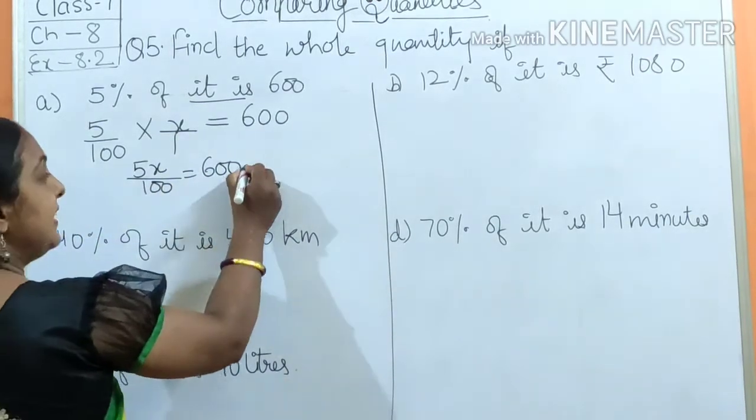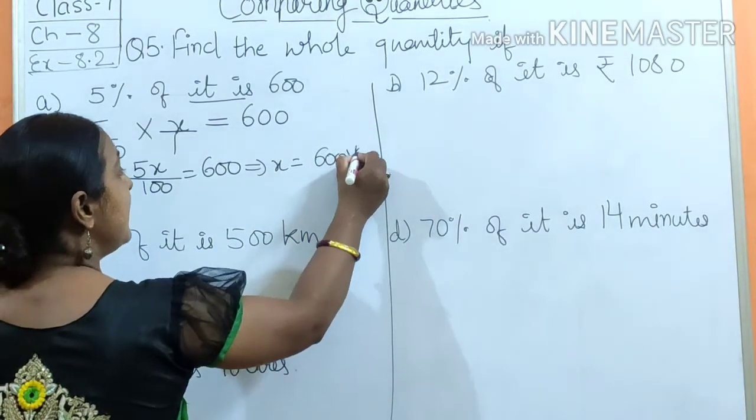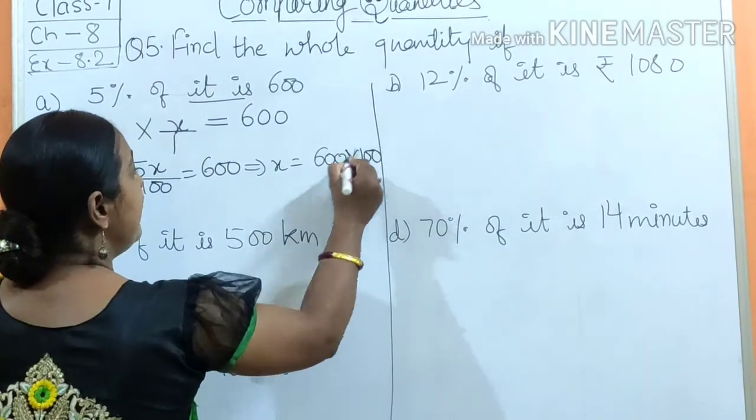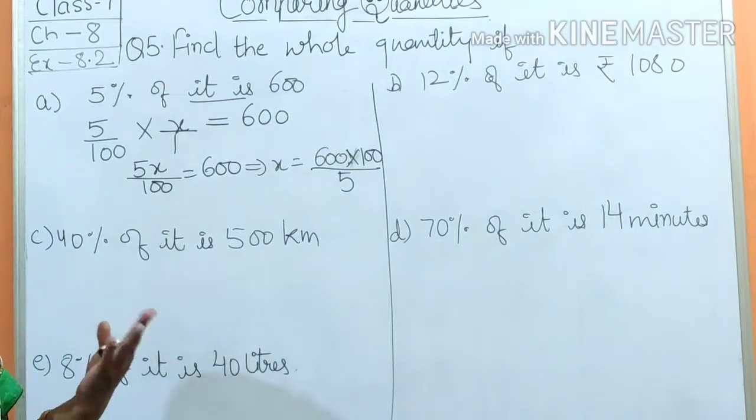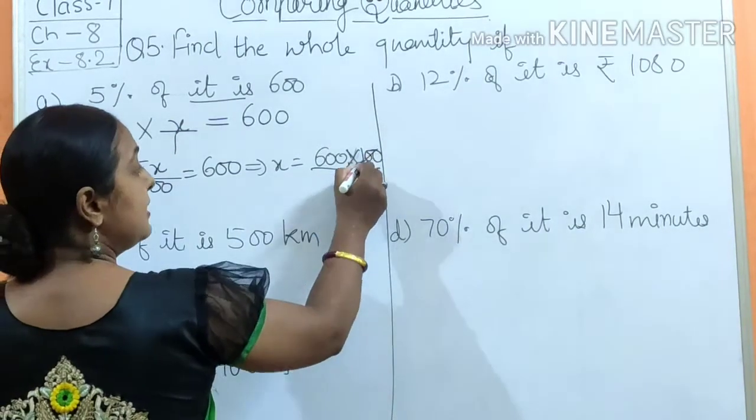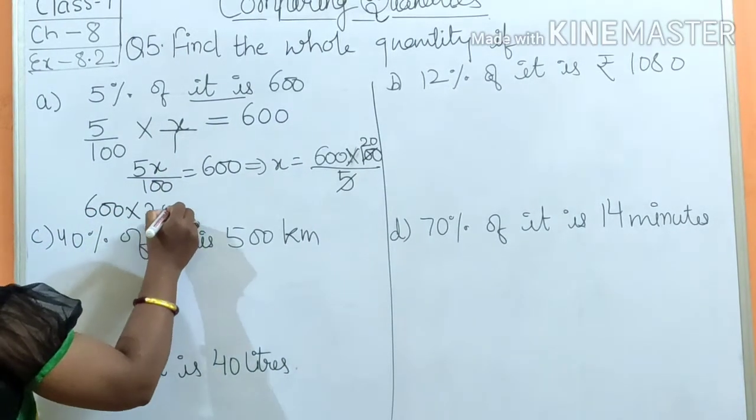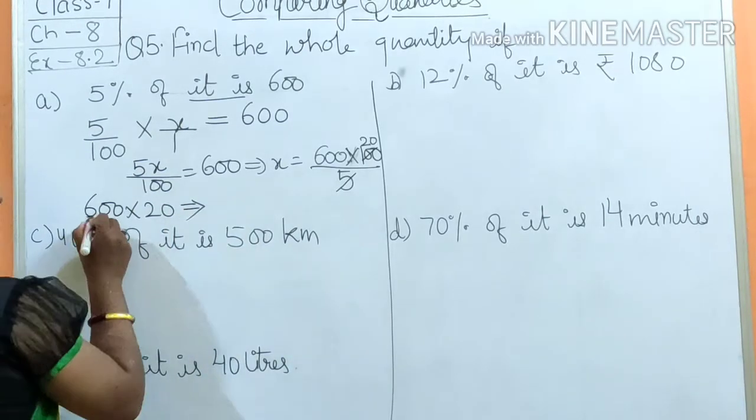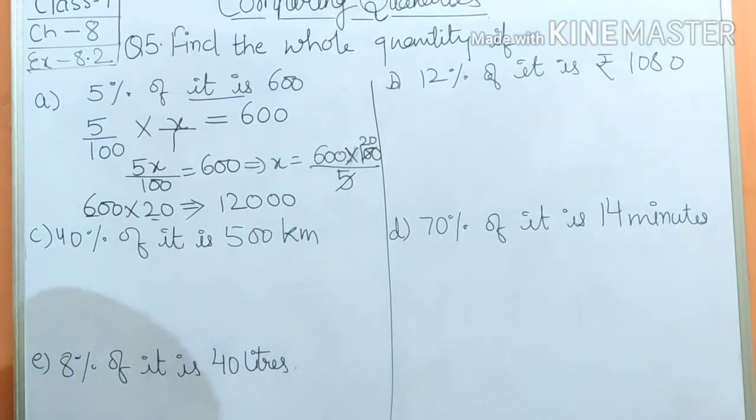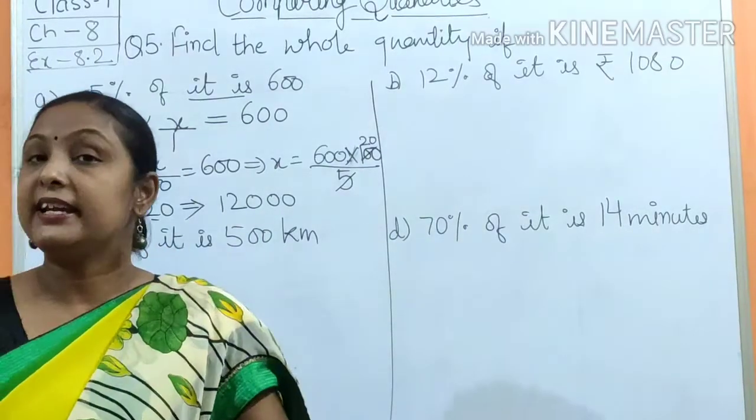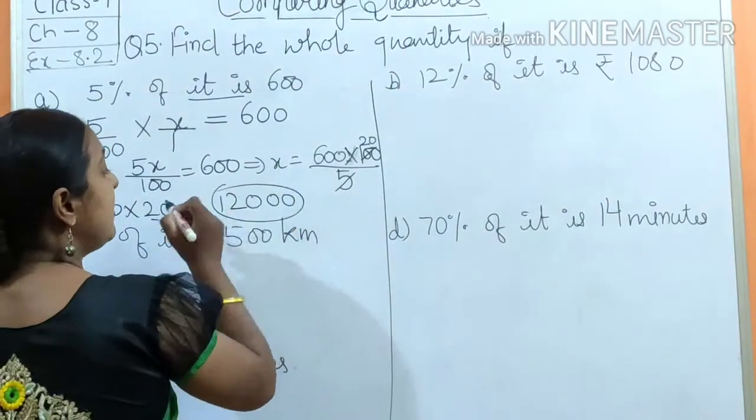Okay, now we keep x here and bring this here. So I'll get 600 multiplied by 100 upon 5. This can be cut, I'll cut it. From the table of 5 this cuts, 20 comes. So what I have is 600 multiplied by 20, and the answer will be 6 to 12, and put three zeros: 1, 2, 3. If you have units, definitely add units. If not, leave it as is. I don't have a unit, so it's just like this. So my answer is 12,000.